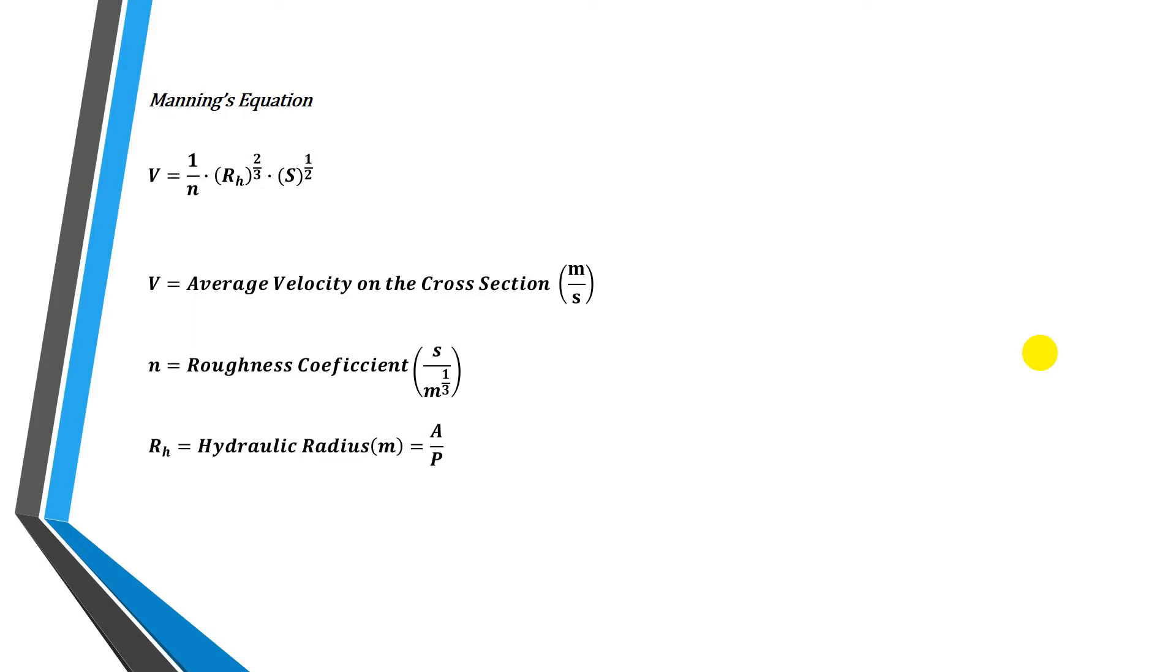Then we have the hydraulic radius, its units are meters. And finally we have the slope S, that is the slope of the channel. Its units can be meters over meters, feet over feet, miles over miles, and so on. In a general sense, its units are length over length, and in that way can be taken as dimensionless.